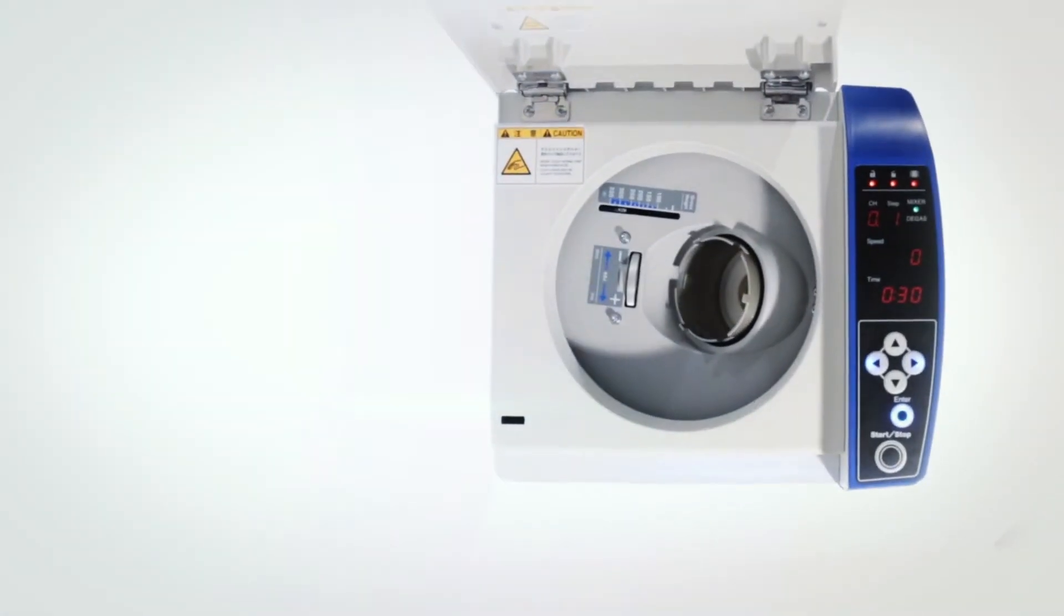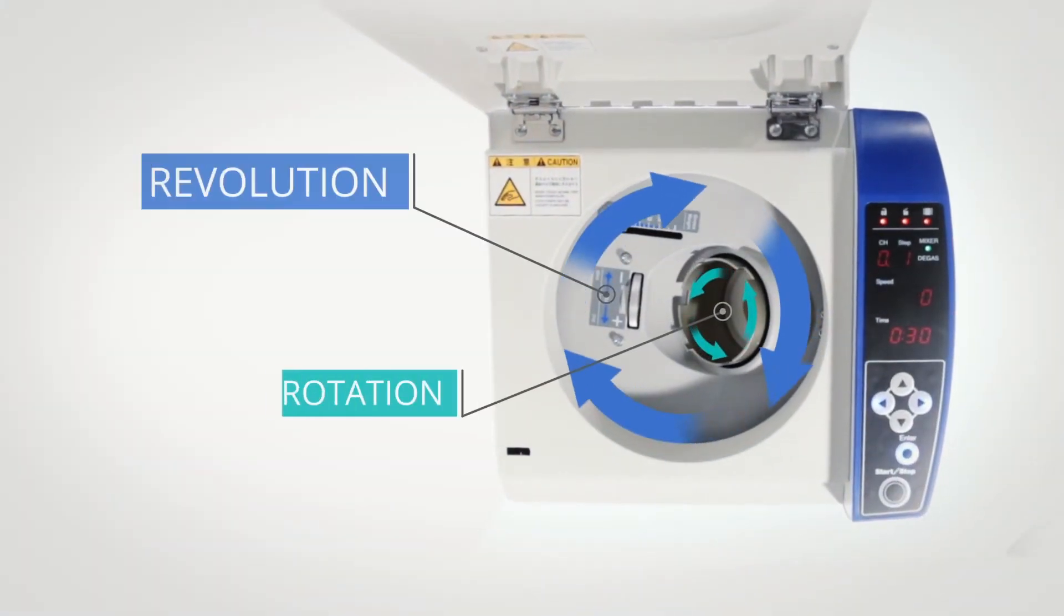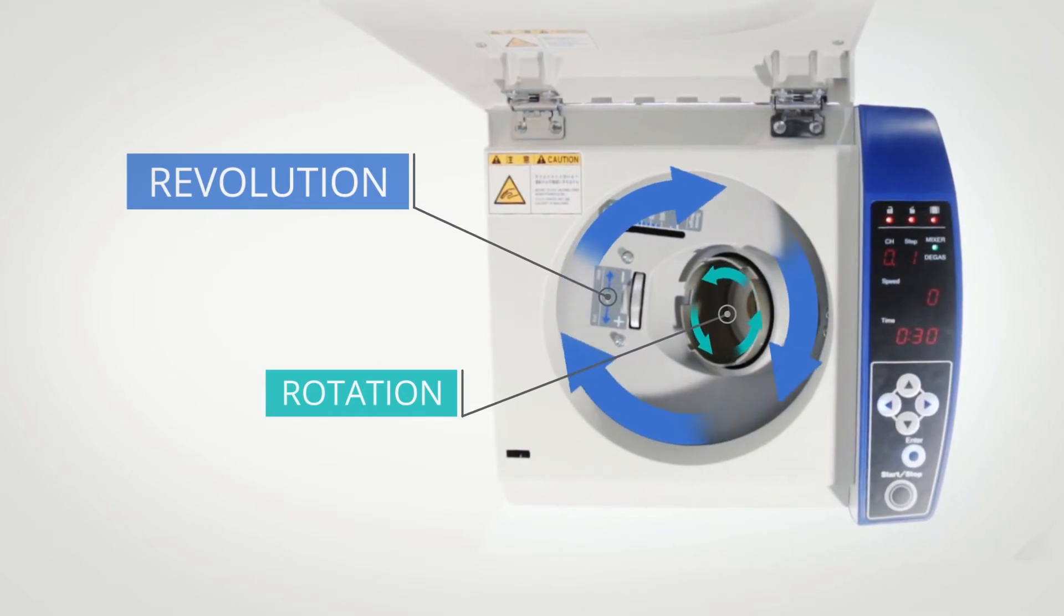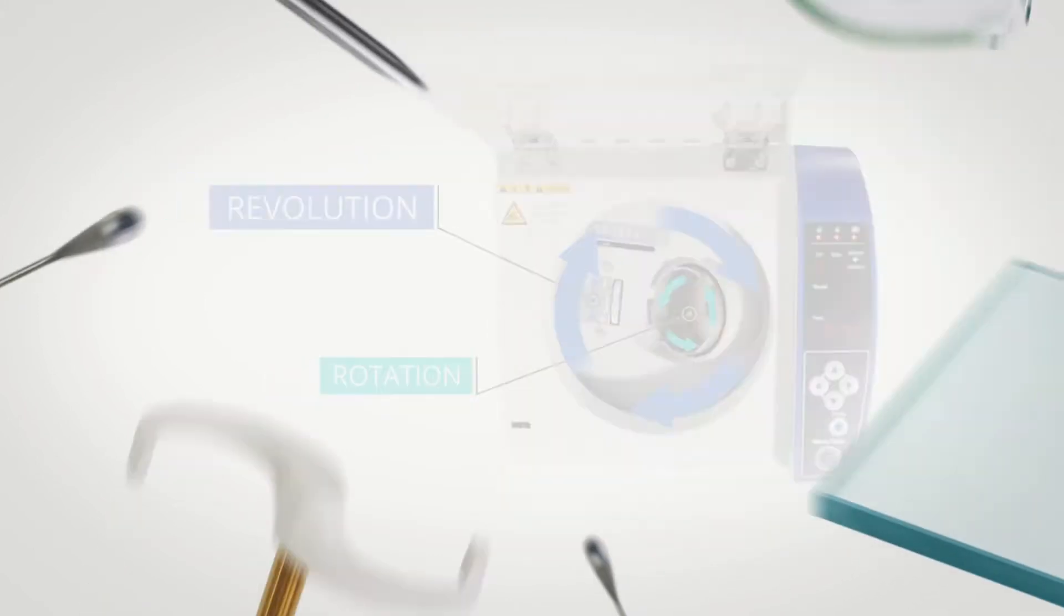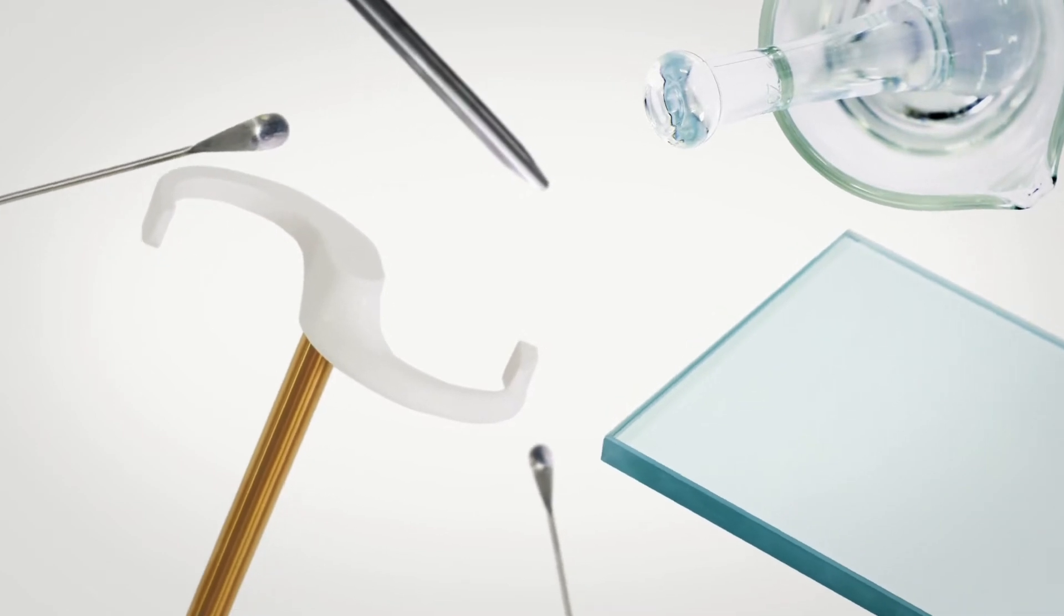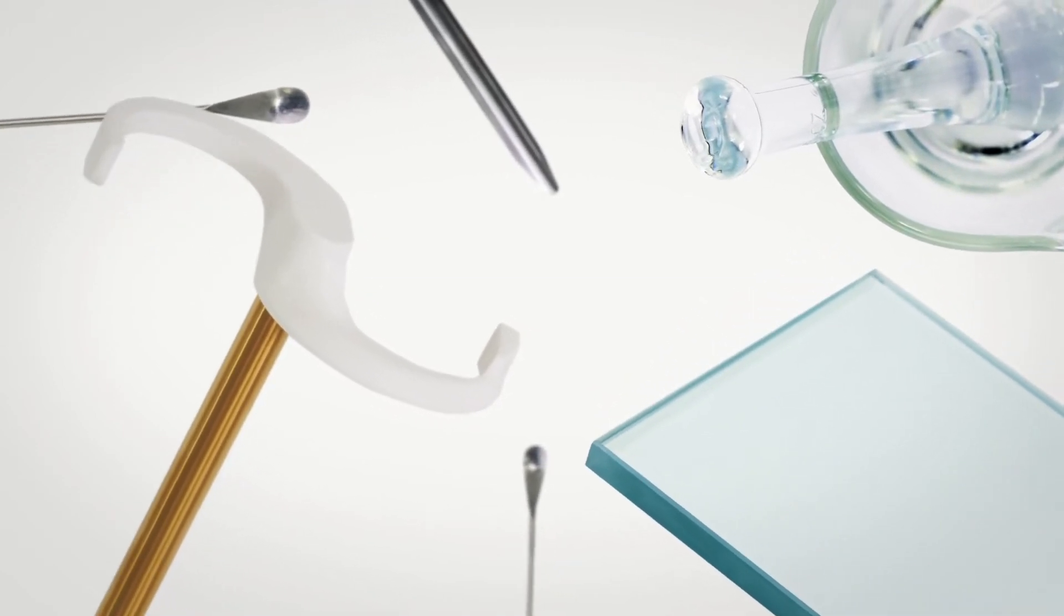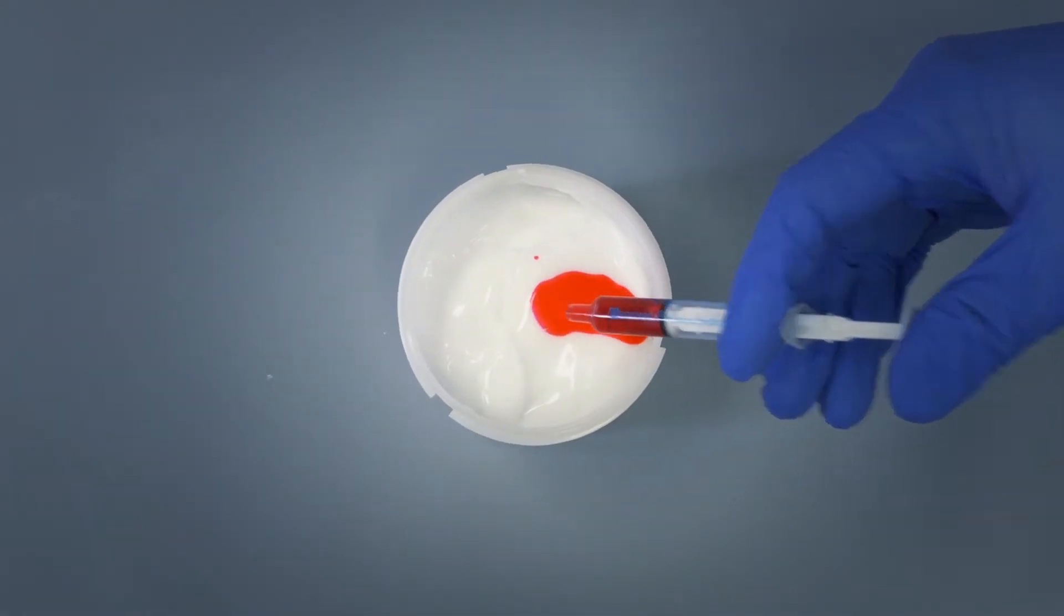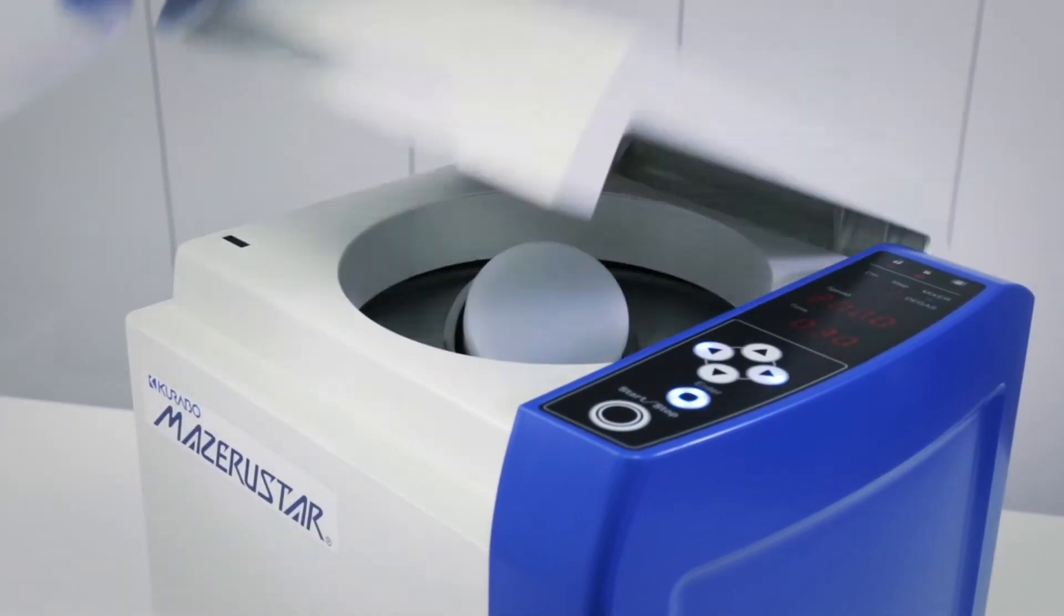This technology works by simultaneously revolving and rotating a mixing vessel around a central axis. It is a unique planetary motion that eliminates the need for mixing rods and lengthy procedures, thus dramatically reducing preparation, cleaning, and mixing times compared to conventional methods.